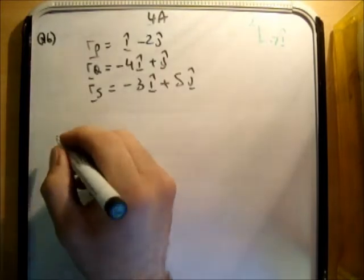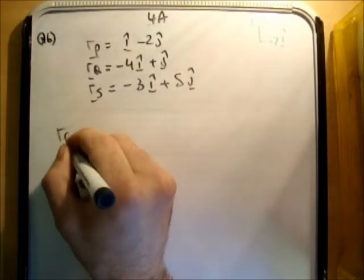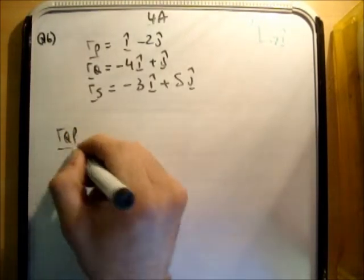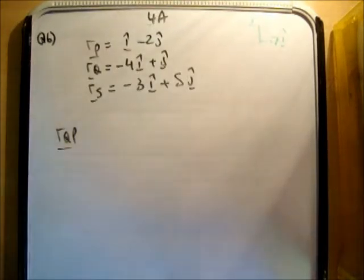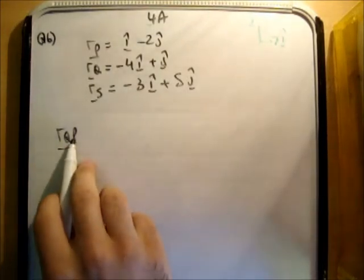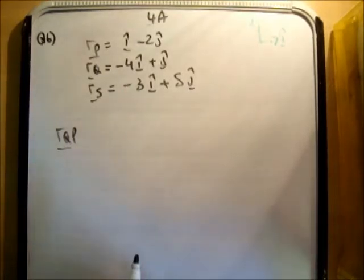So the first thing we were asked to get is RQP. So that is the displacement vector of Q relative to P, so P considers itself to be stationary. And of course these are just displacements, so there's no movement at all.